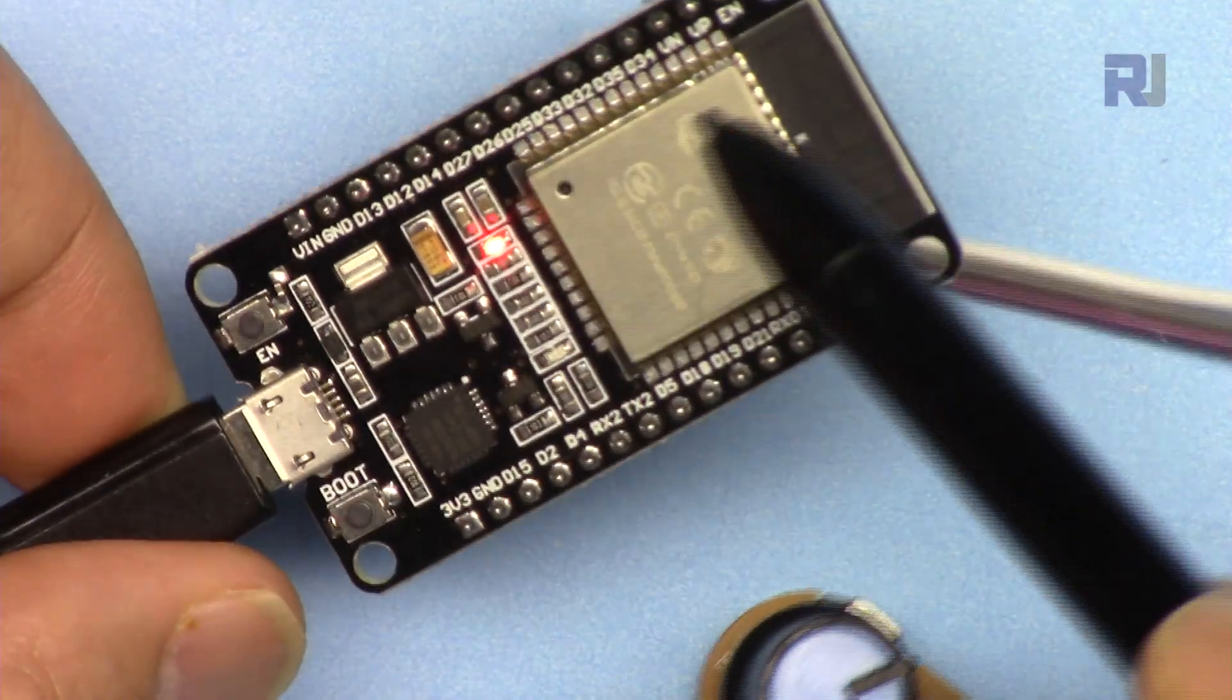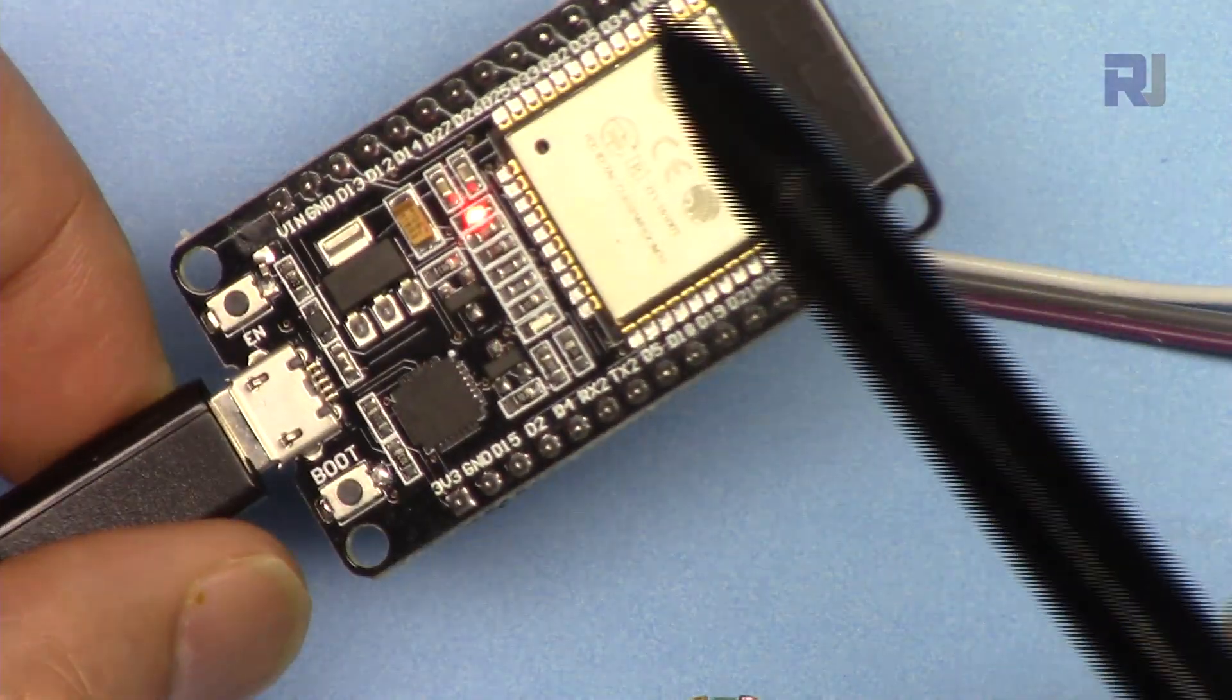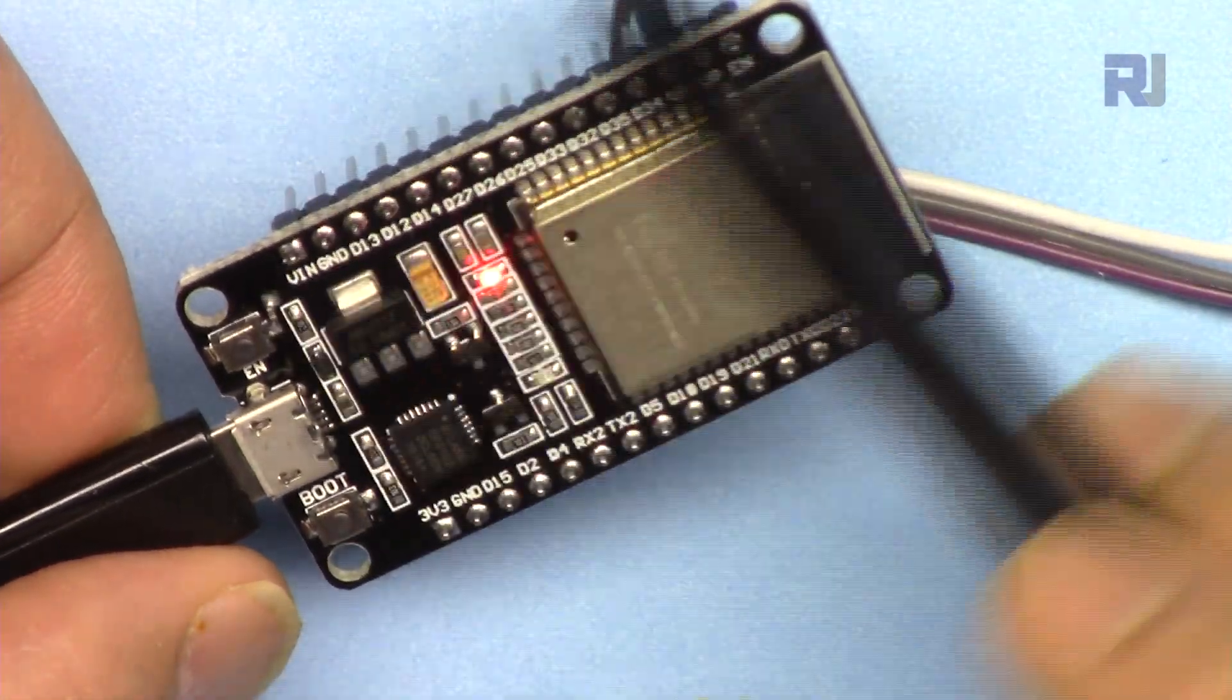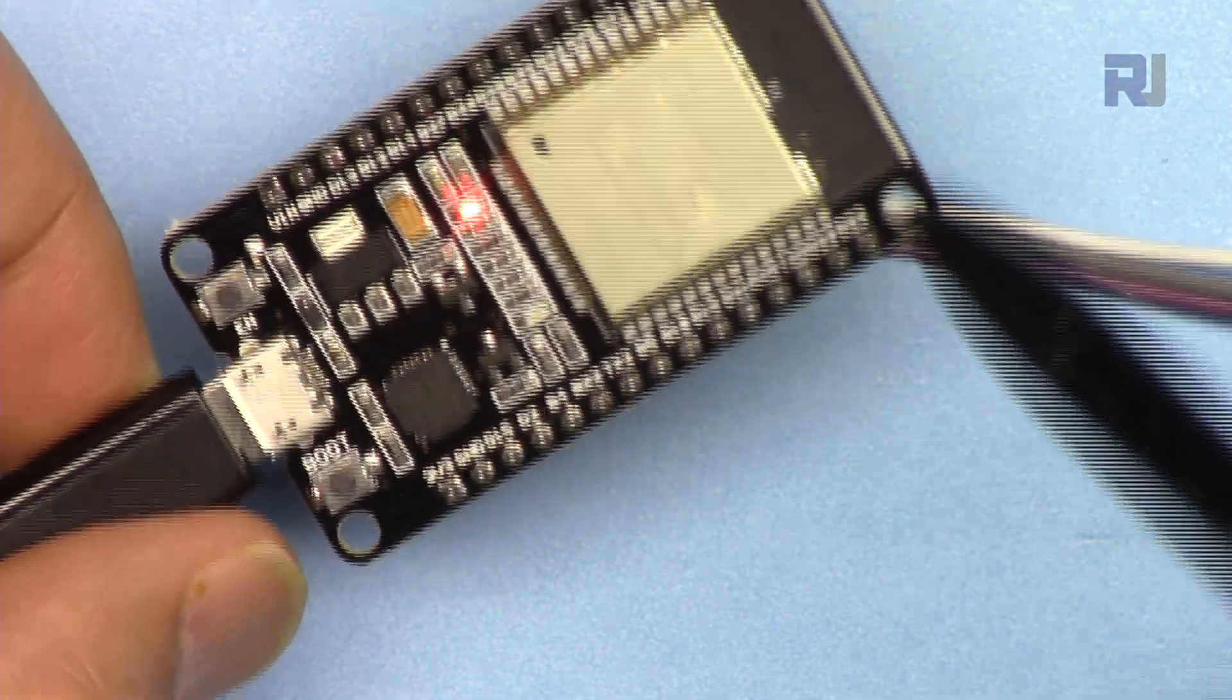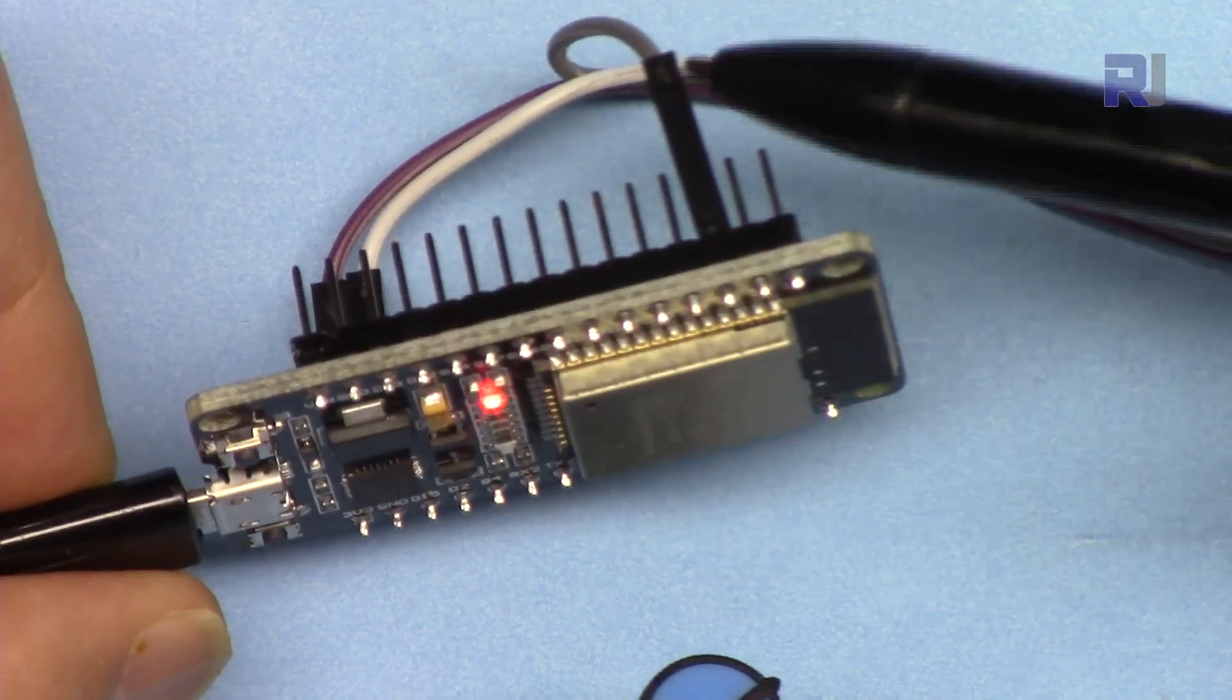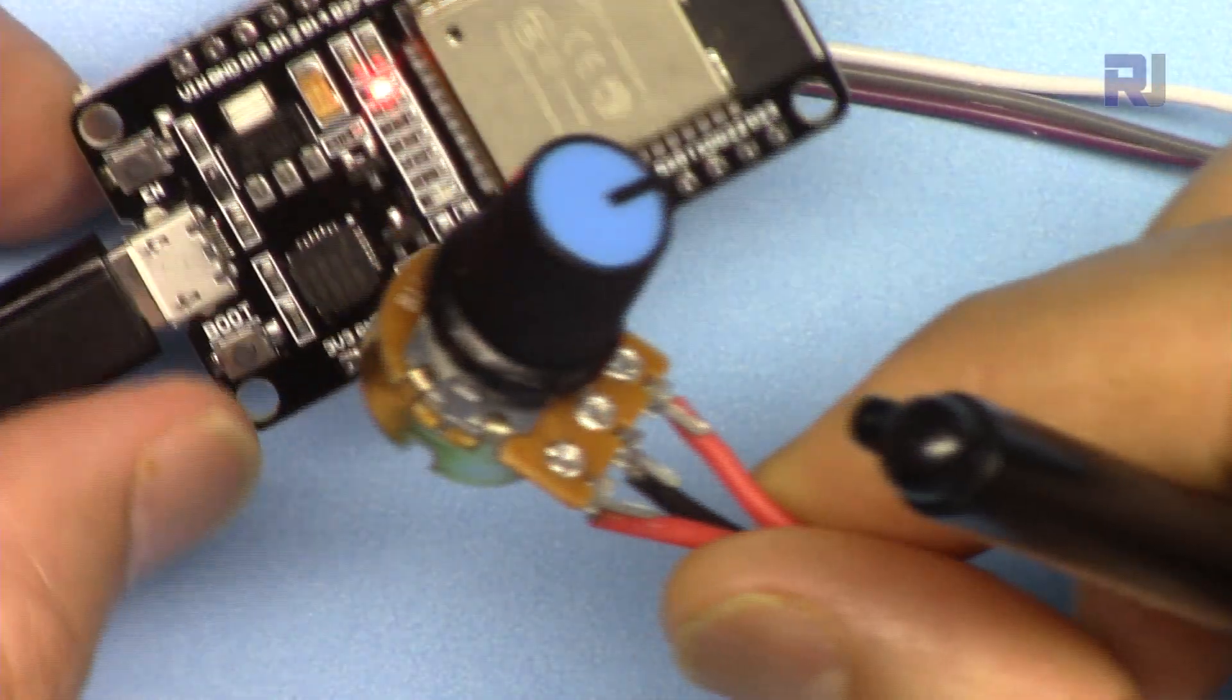ESP32 has 16 analog to digital converter inputs or analog inputs where you can read analog voltages. The availability of a lot of inputs will make it very suitable for different applications and I'm going to show you as an example that we have connected the pin here to read the voltage.